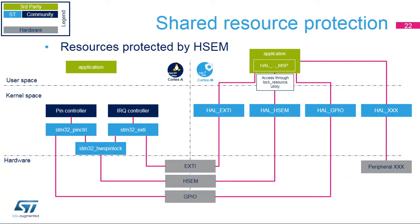This slide shows the software framework involved in the protection of shared resources by the hardware semaphore. On the Cortex-A7 core, accesses to the GPIOs and EXTI configuration registers are protected by the hardware spin lock that gets an HSEM semaphore if free or waits for its release. Note that the U-Boot bootloader also uses the same hardware semaphore during the boot stage. On the Cortex-M4 core, access protection has to be managed by the application, granted by the Lock Resource Utility API. This utility offers a simple interface to lock or unlock a semaphore depending on the resource to protect.